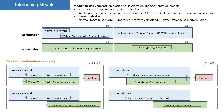The module architecture easily allows users to perform real-time model exchange and combination, and can also add customized expert algorithms. With this architecture, we can quickly test a variety of models to improve accuracy. Here are some combination examples for you.